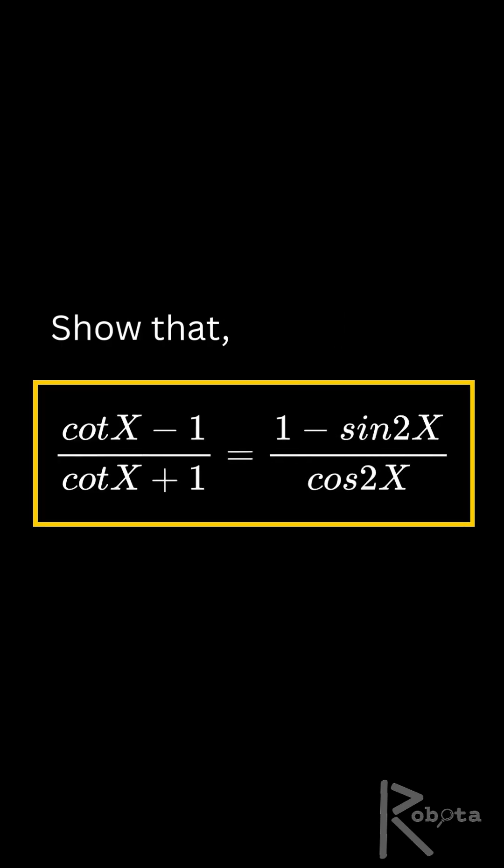We want to show that cot x minus 1 over cot x plus 1 is the same as 1 minus sine 2x over cos 2x.